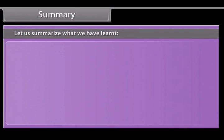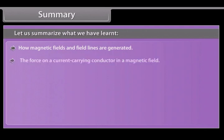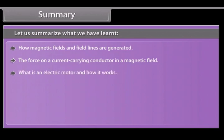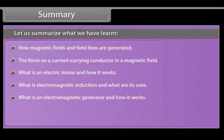Let us summarize what we have learned: how magnetic fields and field lines are generated, the force on a current carrying conductor in a magnetic field, what is an electric motor and how it works, what is electromagnetic induction and what are its uses, what is an electromagnetic generator and how it works, and the use of wires and fuse in domestic electric circuits.